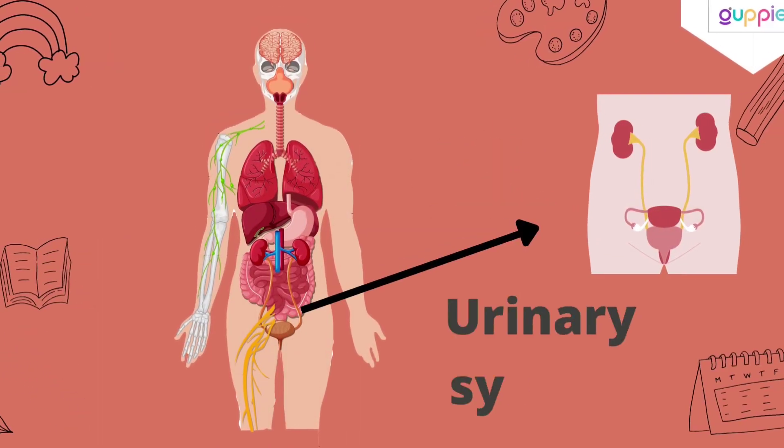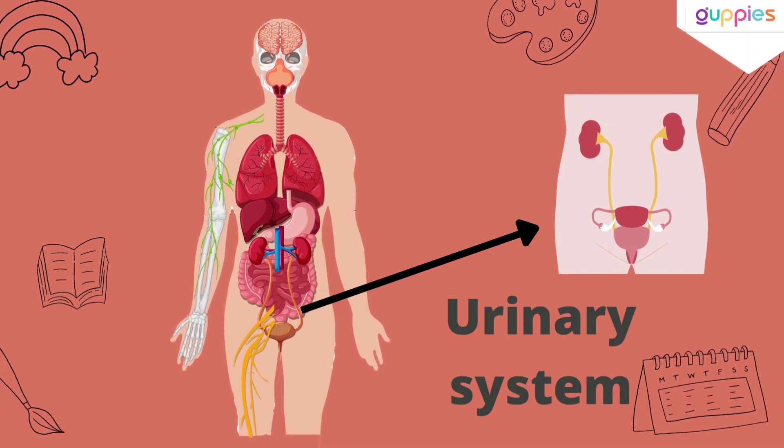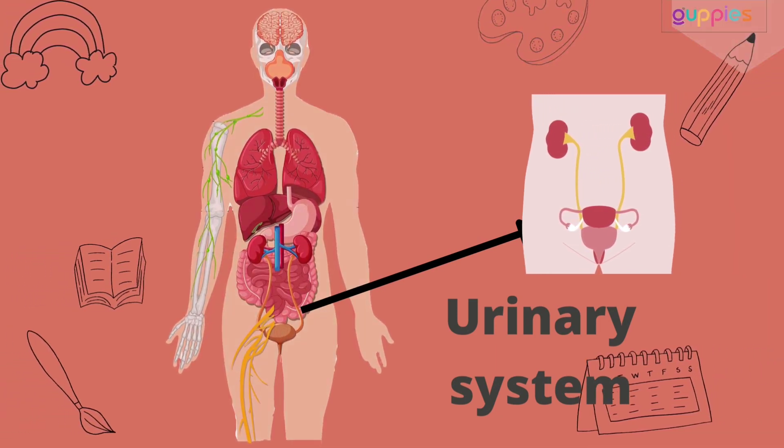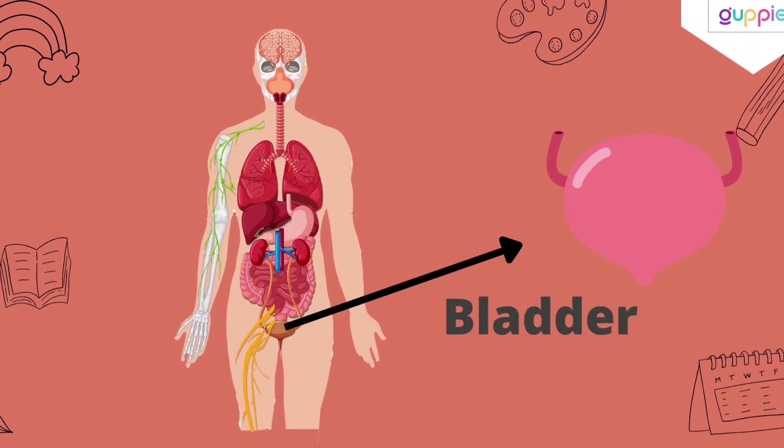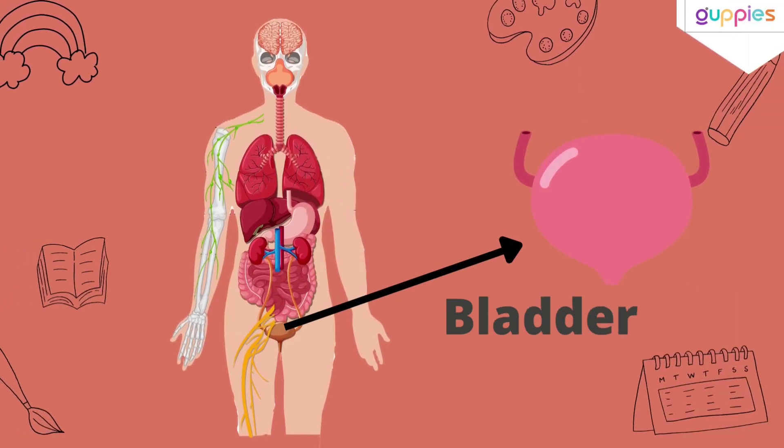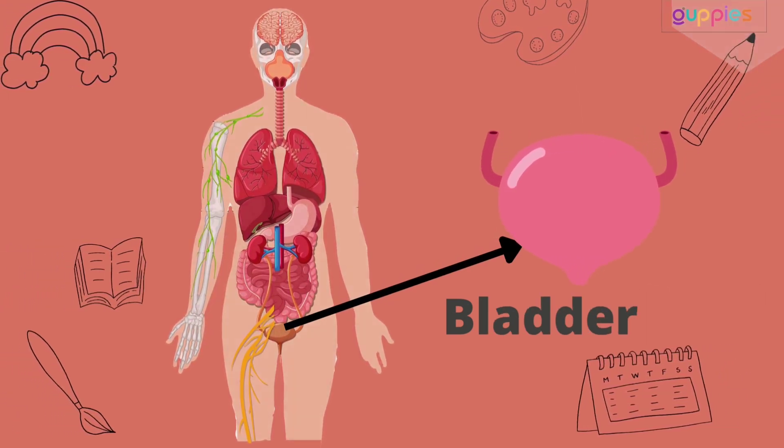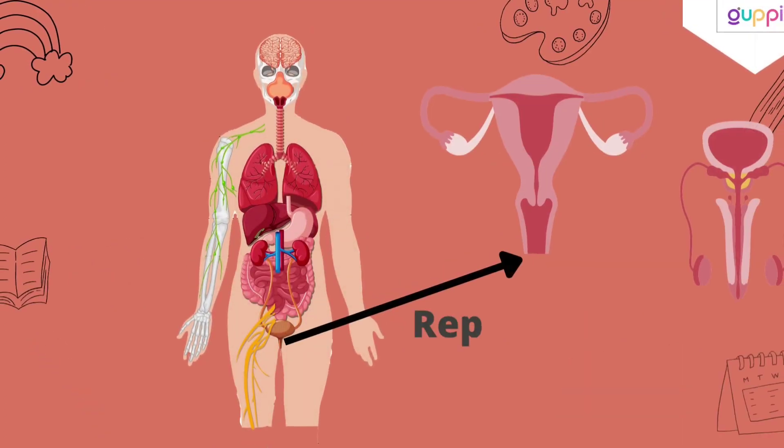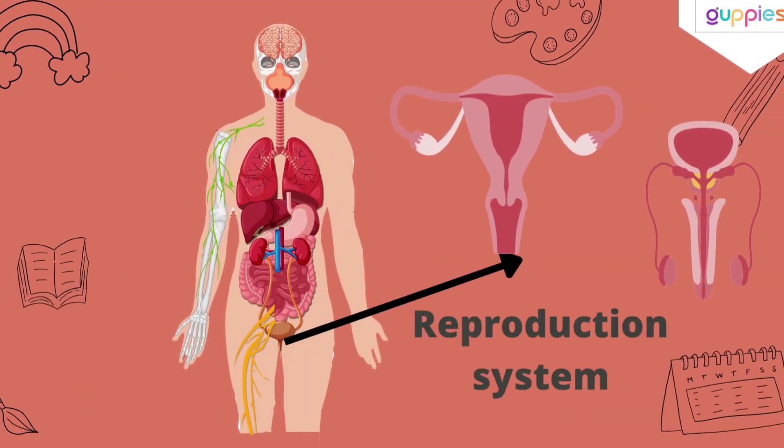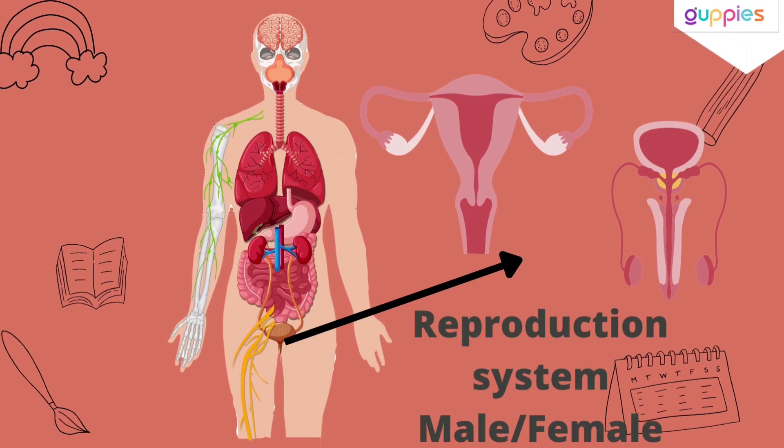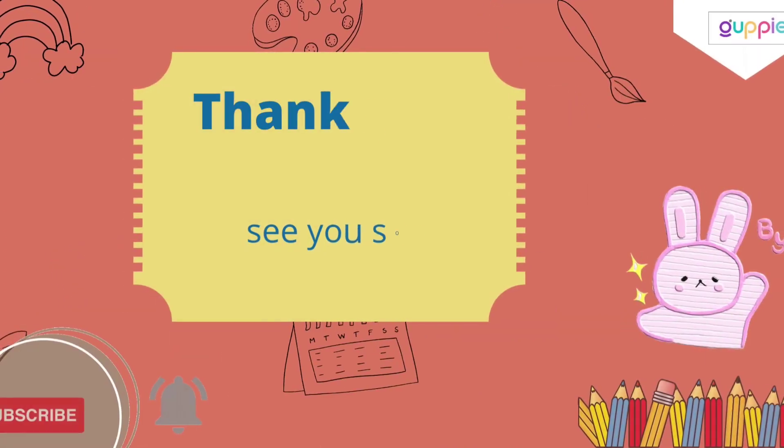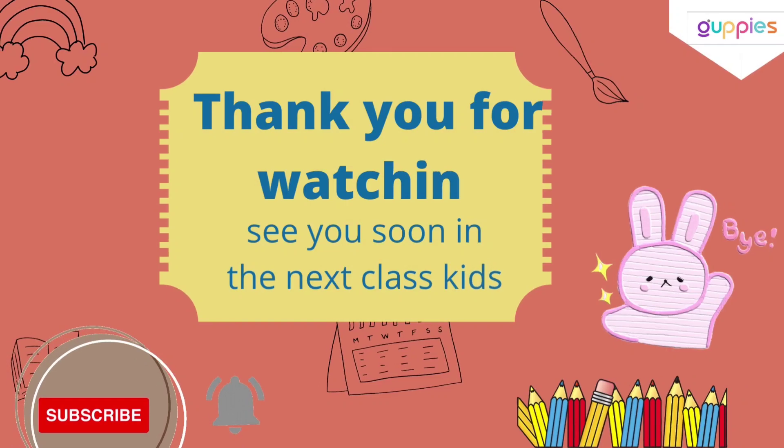This is urinary system, U-R-I-N-A-R-Y, urinary. This is bladder, B-L-A-D-D-E-R, bladder. This is reproduction system, different in male and female. Thank you for watching, see you soon in the next class kids!